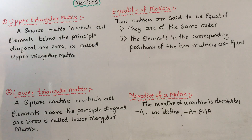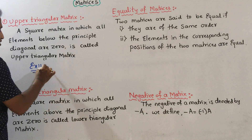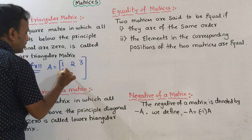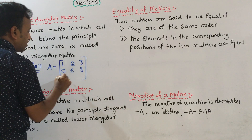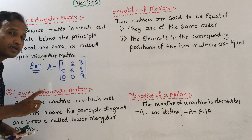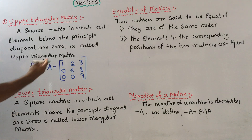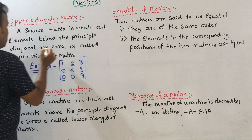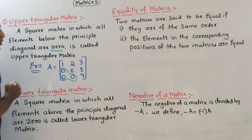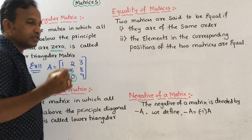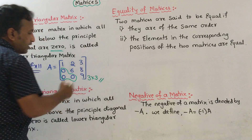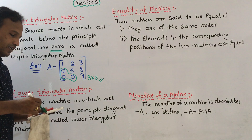Examples: for a 2×2 and 3×3 matrix. Matrix A equals — for example, a 3×3 matrix: 1, 2, 3 / 0, 6, 8 / 0, 0, 9. This is an upper triangular matrix in which all elements below the principal diagonal are zero.